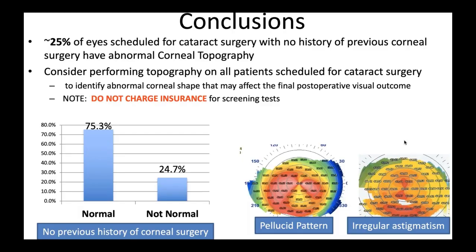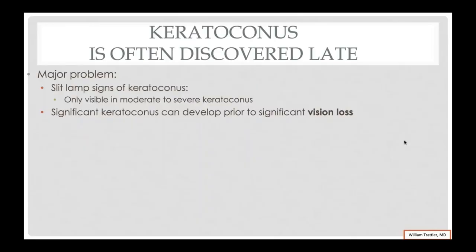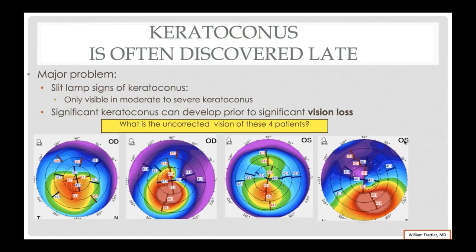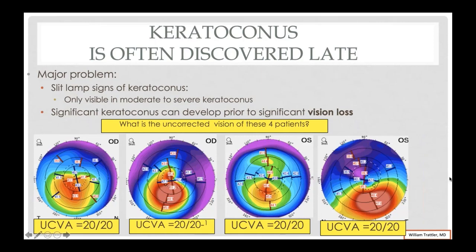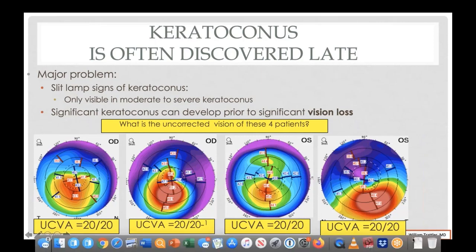The major problem is that the slit lamp signs of keratoconus are often only visible when the condition is moderate to severe. Here are four different patients, all with keratoconus — you can see the red steepening on topography, and the second and fourth have more advanced cases. But surprisingly, when we checked their vision, they could actually read 20/20, 20/20 minus, 20/20, and 20/20. So these patients have keratoconus yet can still see the 20/20 line. If you don't perform topography, you would never pick up that they also had keratoconus. Some did have complaints of ghosting and blurred vision, but they could read down to 20/20 uncorrected.